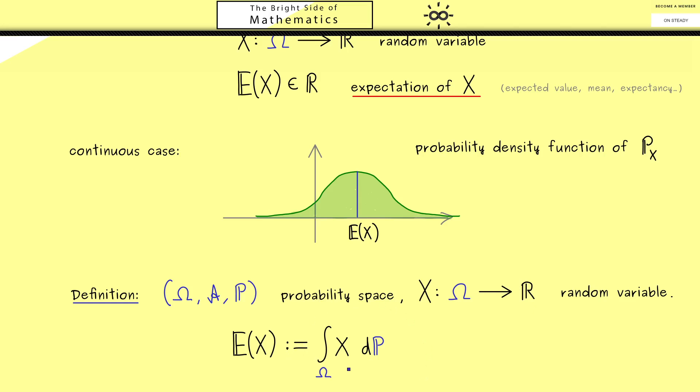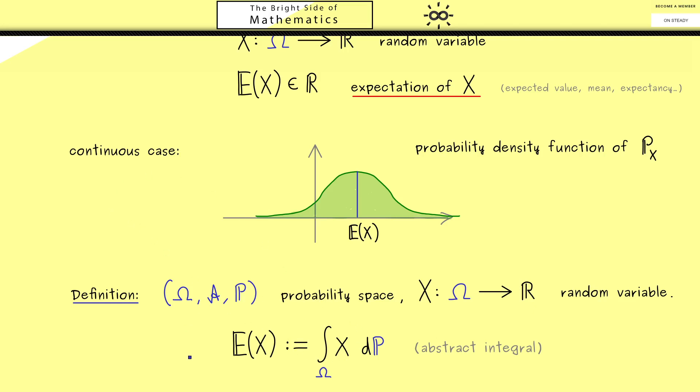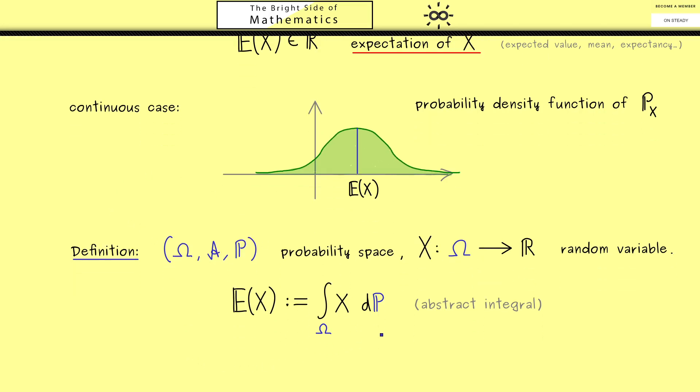In case you know measure theory, you immediately see this is a well-defined Lebesgue integral if it exists. If you are interested in how one can define such an abstract integral for a given measure P, you can watch my playlist about measure theory. However, you definitely don't need all of measure theory if you just consider continuous and discrete cases. In these cases, you don't need to be so abstract. For this course, it's sufficient that you know such an abstract formula exists.